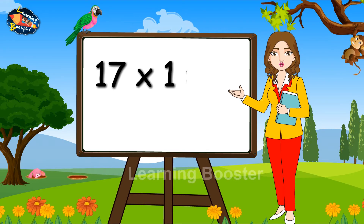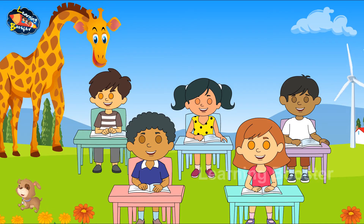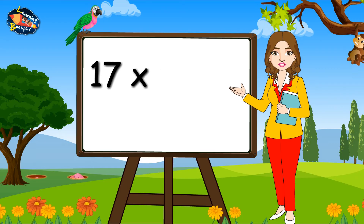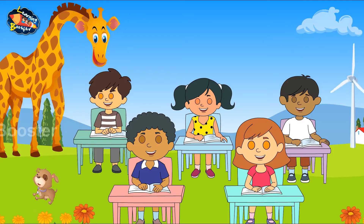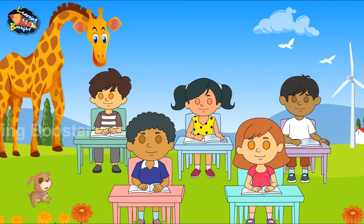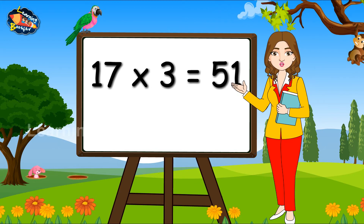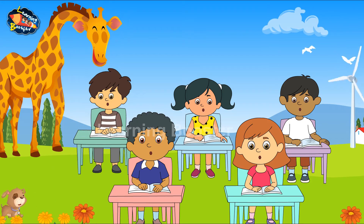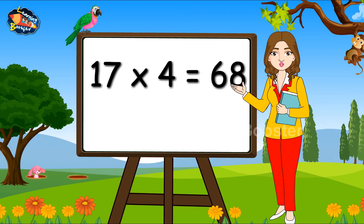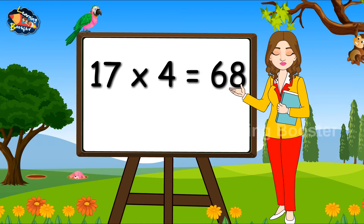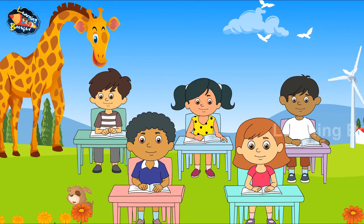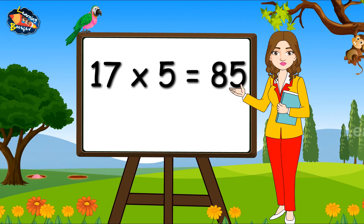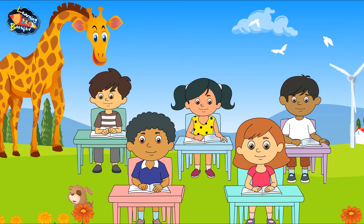17 1s are 17. 17 2s are 34. 17 3s are 51. 17 4s are 68. 17 5s are 85.